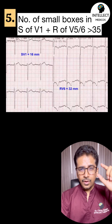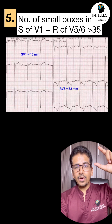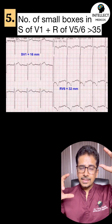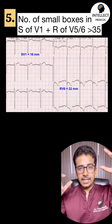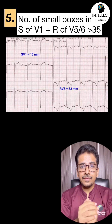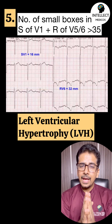Fifth: if you add the S-wave in V1 plus R-wave in V5 or V6, and if it is more than 35, this is left ventricular hypertrophy.